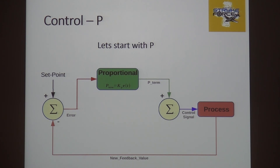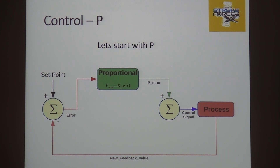The RoboRIO tells the controller: I want you to go 100. The controller says, I need to go 100. It asks the encoder: how fast are you going? The encoder says 0, because the motor isn't turned on. So I'm supposed to be going 100, I'm going 0 — that sums to an error. If I'm supposed to be going 100 and actually going 0, the error is 100.